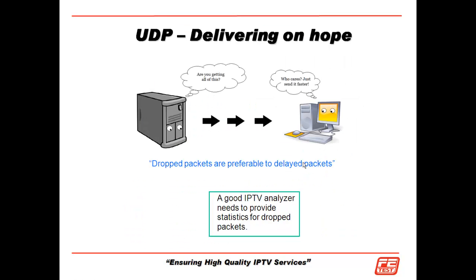I mentioned UDP just a minute ago, and we like to call it delivering on hope. We're going to send these IPTV packets over UDP, and with UDP, dropped packets are preferable to delayed packets, which means we're just going to send it as fast as we can. If a packet doesn't get there, it's no problem — just keep sending. So a good IPTV analyzer needs to provide statistics for dropped packets, but we're going to see that you have to do a whole lot more as well.